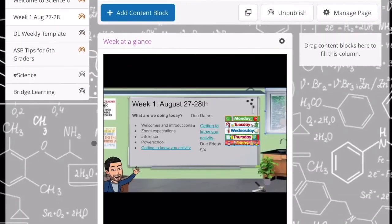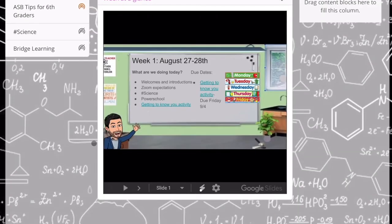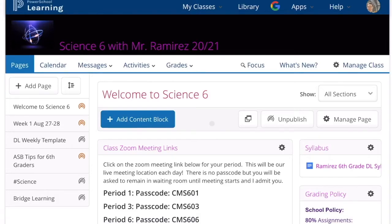When we go into week one, you're able to see our virtual Bitmoji classroom, and you can click on the assignment that we're working on. For example, the Getting to Know You activity was assigned, it is due on Friday the 4th, and you can also click on any of the days of the week.